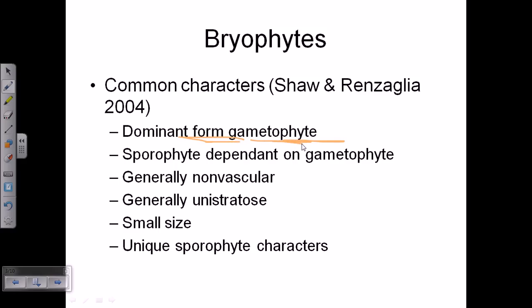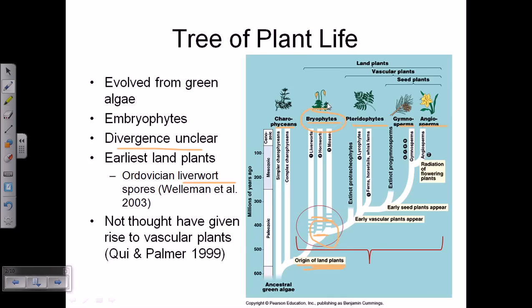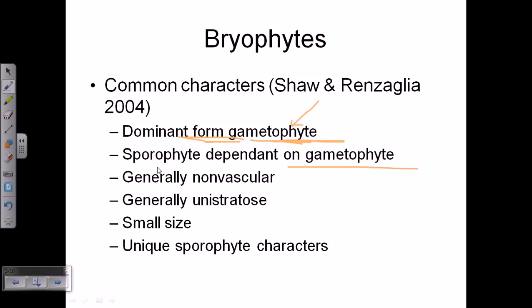Looking at some common features of bryophytes: their life cycle is dominated by the gametophyte rather than the sporophyte. In angiosperms or gymnosperms, the sporophyte generation dominates, but in bryophytes the gametophyte generation dominates, and the sporophyte is completely dependent on the gametophyte. In a picture of a moss, the leafy part is the gametophyte, and the other part is the sporophyte, which depends on the gametophyte for nourishment and nutrients.